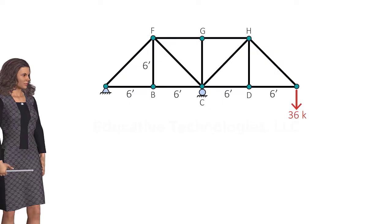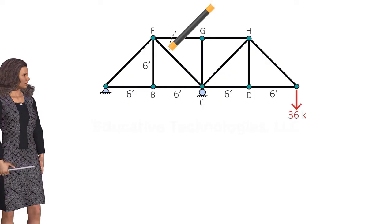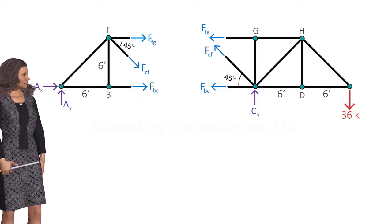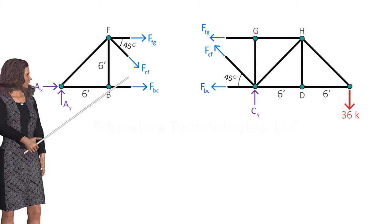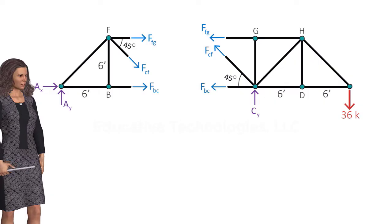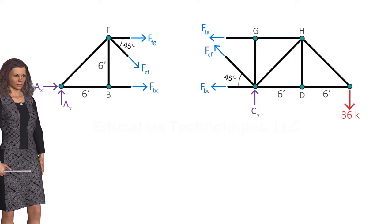For example, suppose we want to calculate the tension force in member BC. We cut through members FG, FC, and BC, dividing the truss into two parts. This leads to a total of five unknown forces for the left diagram: three unknown member forces and two unknown support reactions. The right diagram has a total of four unknowns. But we can only write three equilibrium equations for each part, so we end up with more unknowns than equations, which means we cannot solve for the unknowns.